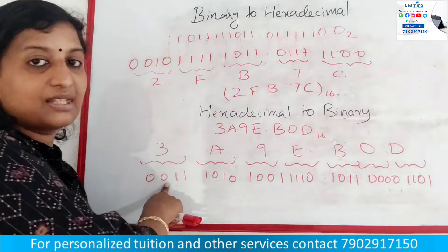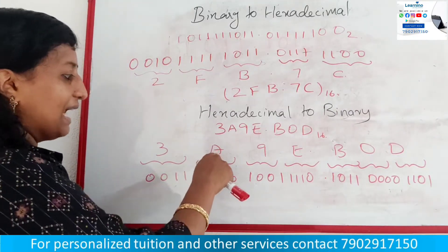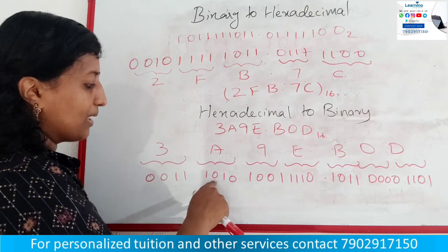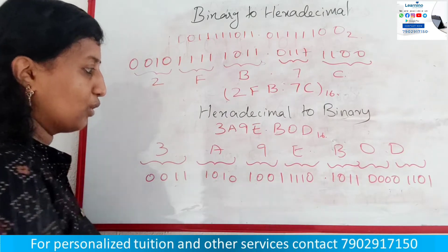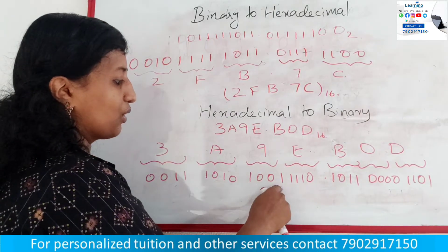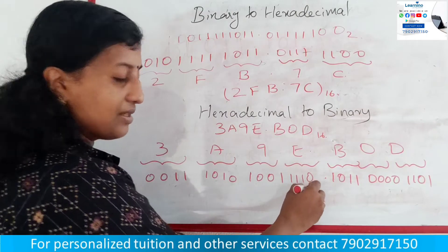We have: 3 → 0011, then 9 → 1001, and E → 1110. Each hex digit expands to its 4-bit binary equivalent.